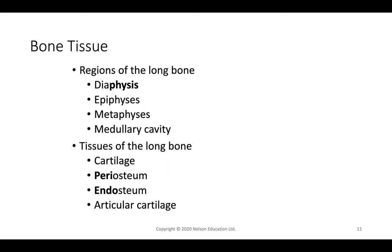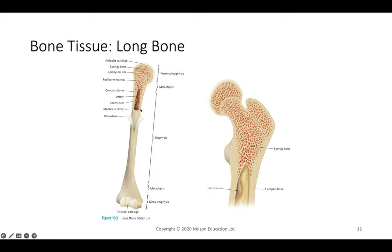Long bones can be divided into major sections: the diaphysis (center shaft), metaphysis (connecting region), and proximal or distal epiphysis. Proximal means closer to the body; distal means further away. Bone is comprised of multiple tissue types including articulating cartilage designed to grind against other cartilage at joints, as well as the periosteum on the outside and endosteum on the inside.